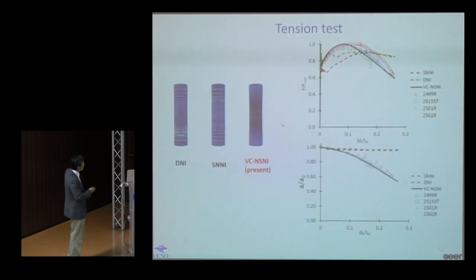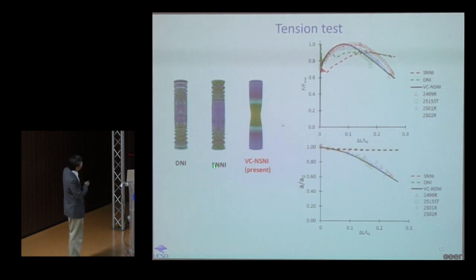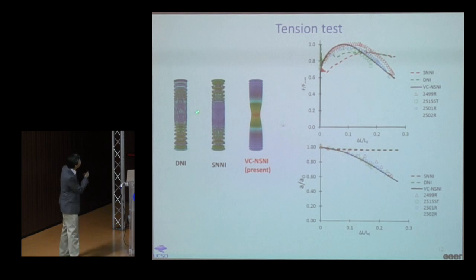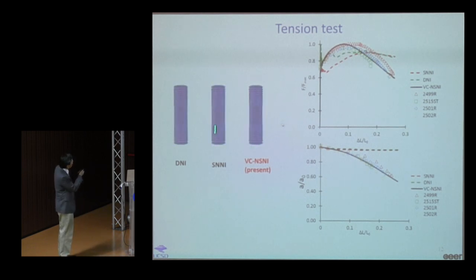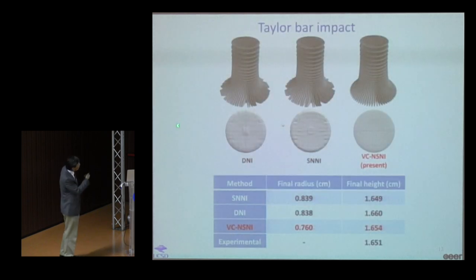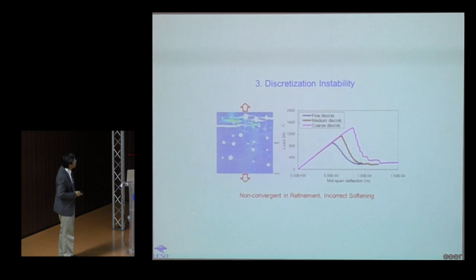In a necking problem, plain nodal integration or SNNI produces unstable modes everywhere, causing numerical necking throughout the specimen instead of at the center. With the stabilized formulation, the result agrees almost perfectly with experimental data.